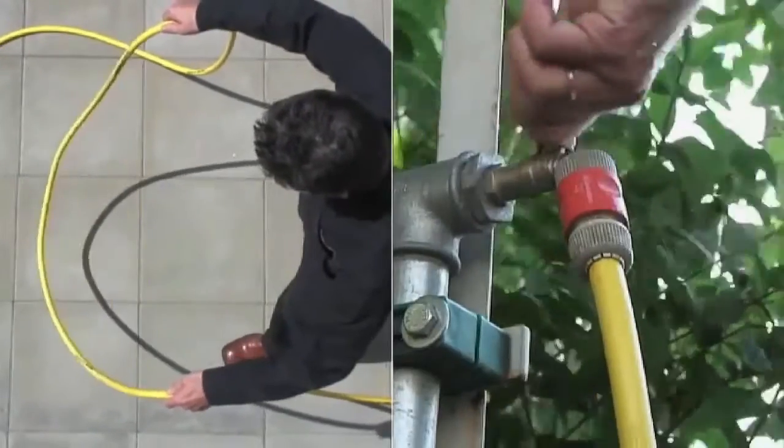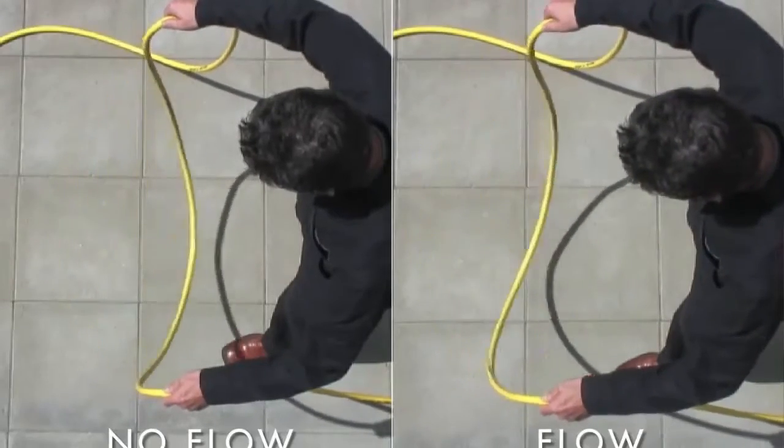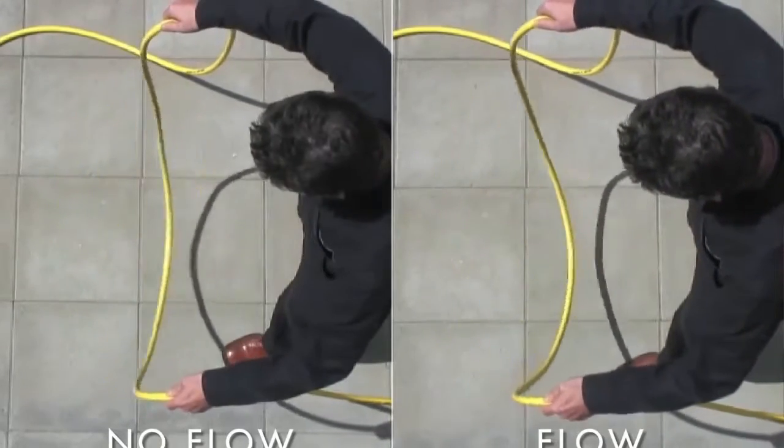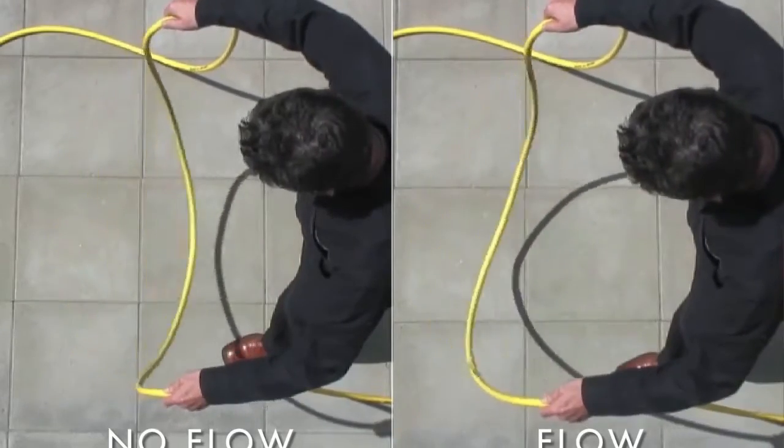But when a water flow is turned on, the water is forced through the swinging hose. The hose twists as a result of the changing angular velocity in the curved hose. That's the Coriolis effect in action.